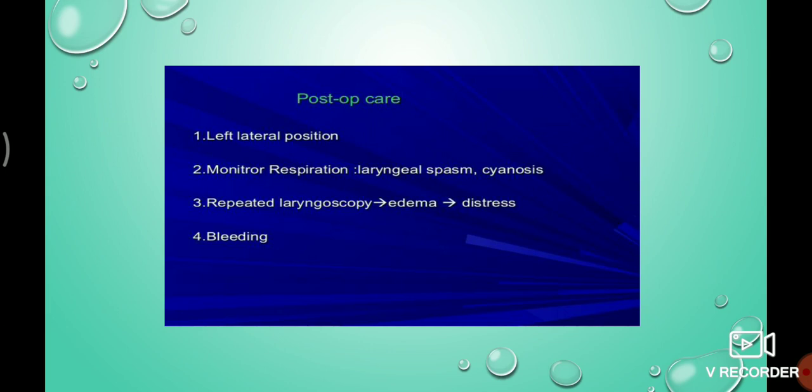Monitor vital signs, especially respiration. Check for laryngeal spasm and cyanosis — cyanosis means bluish discoloration of the skin or mucous membrane. Repeated laryngoscopy can cause edema, so we should assess for laryngeal edema. Also assess for bleeding.